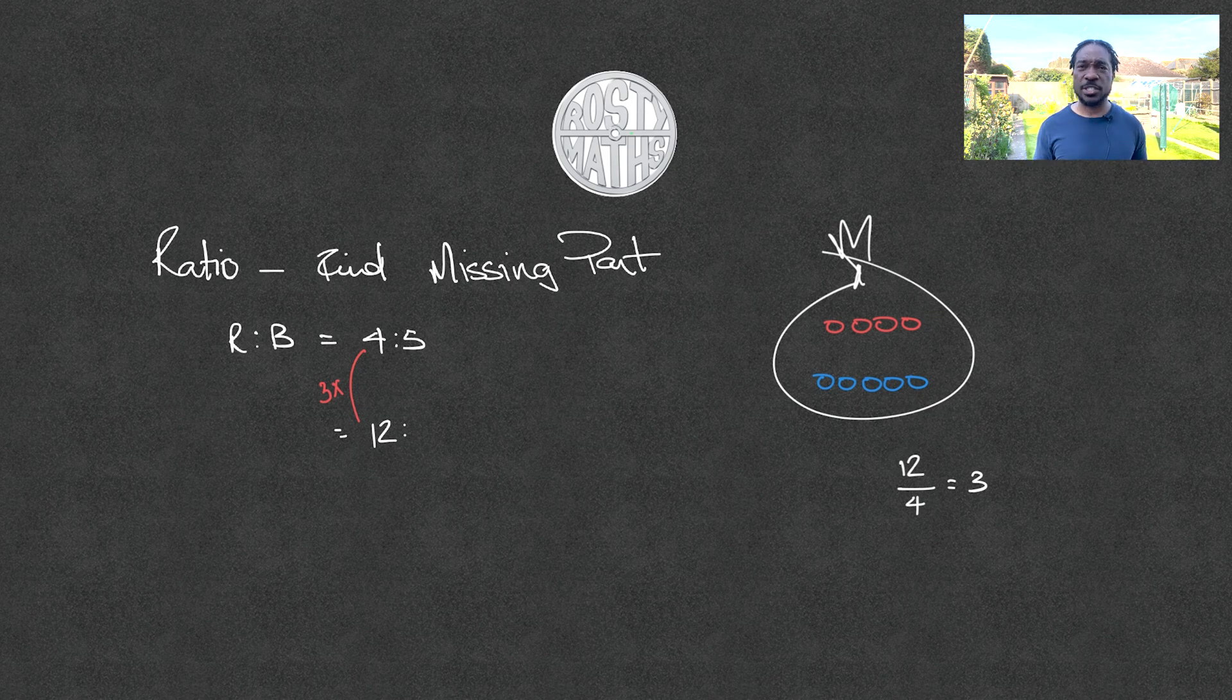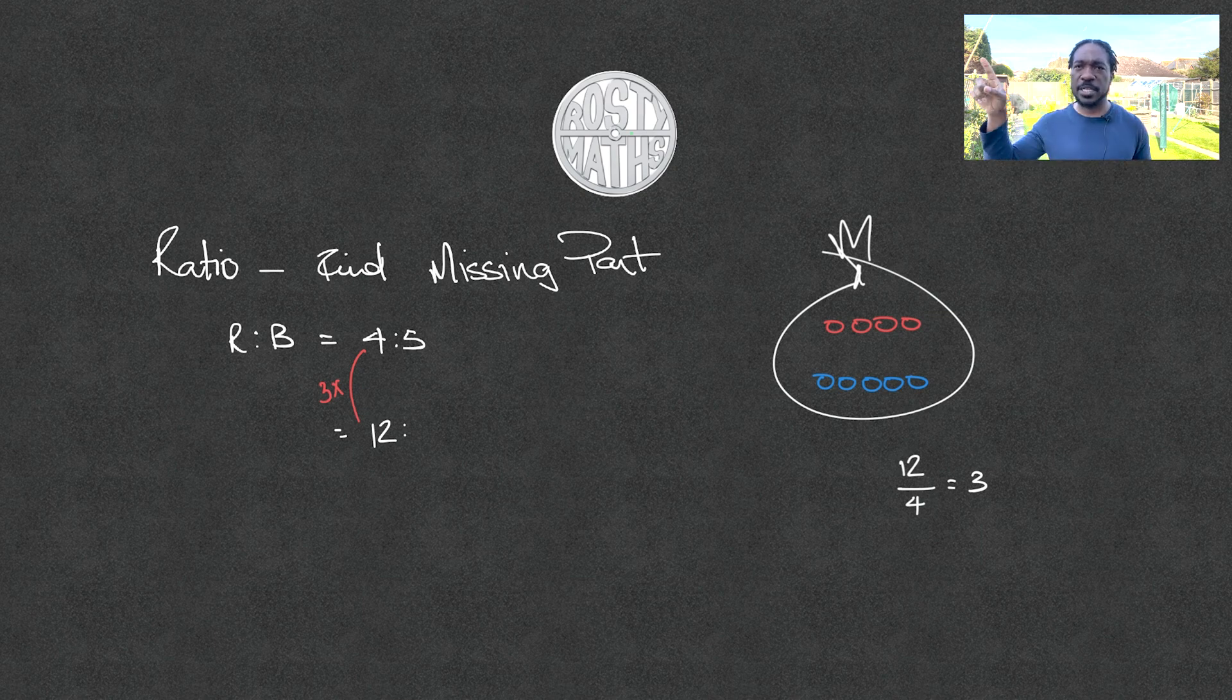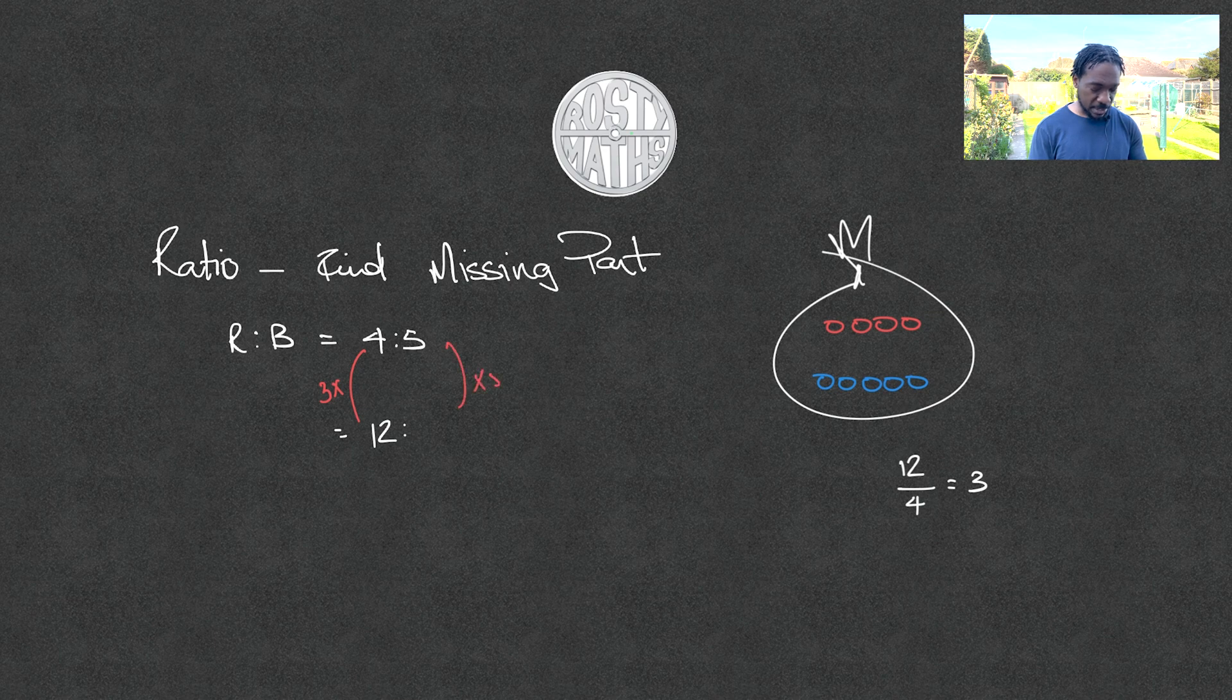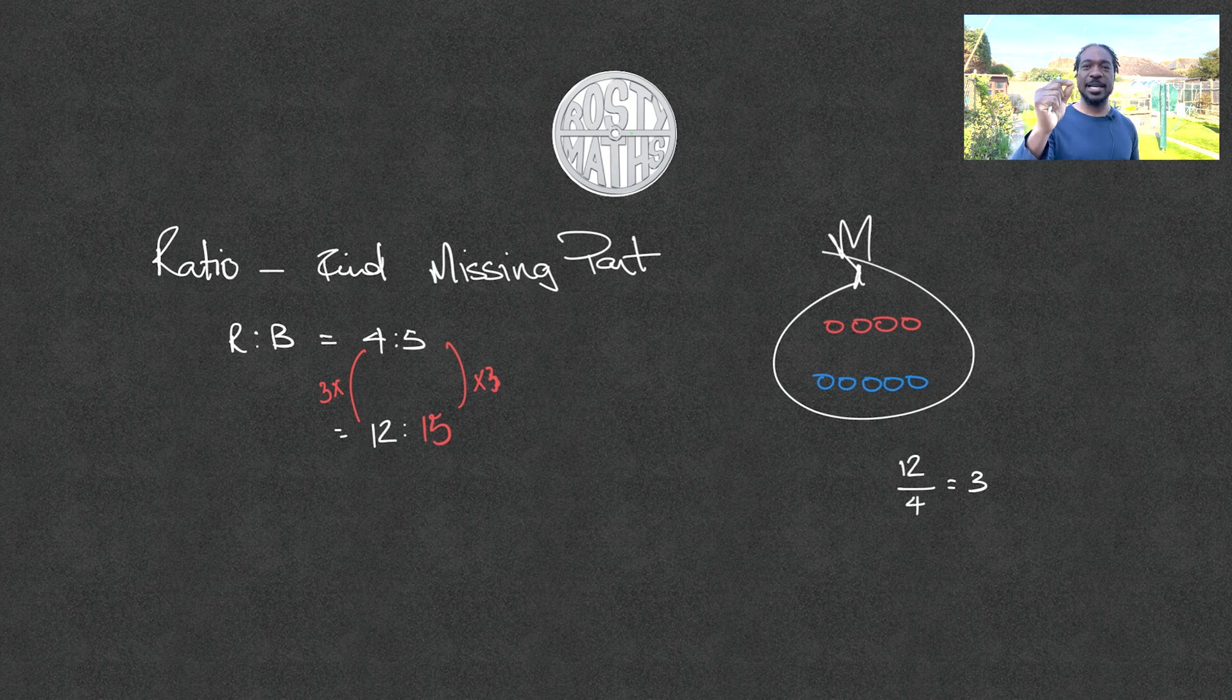Anyway, let's go back into it. Now that I know that three was multiplied by four to make twelve, I now need to do the exact same thing with the five to work out how many blue counters I will get. So now I will multiply that five by three to give me fifteen blue counters. And just like that, I have found the missing part of my ratio.